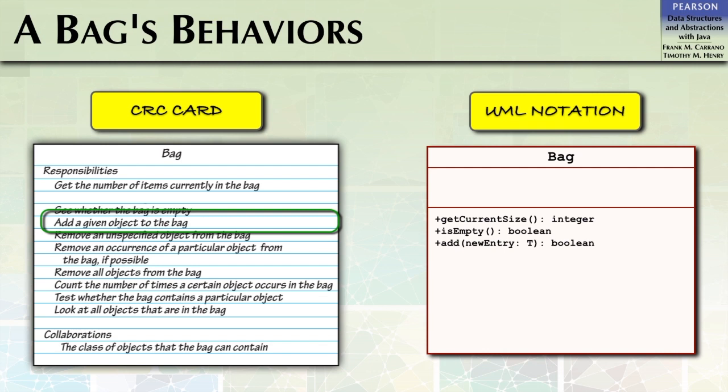Instead, we can define a private method to make this check and resize the array bag if necessary. Let's name the method ensureCapacity. Also, since the bag will always have enough capacity for an add, the method will never return false, so it will return true at the end.